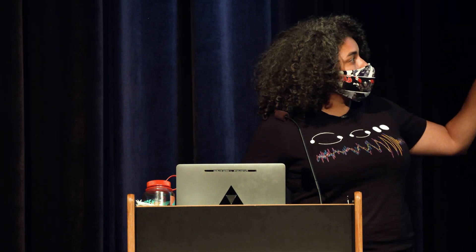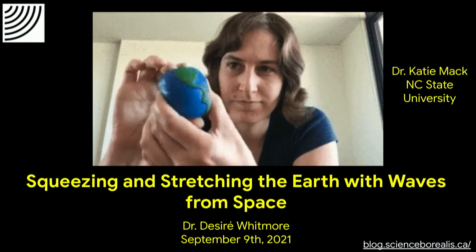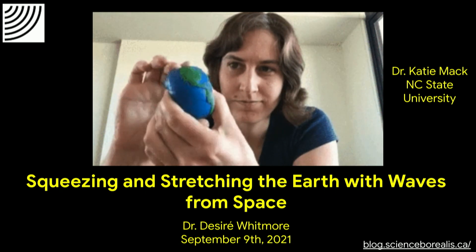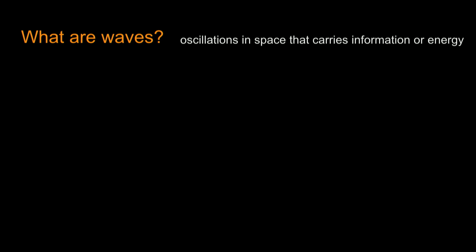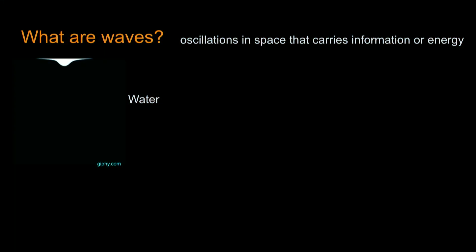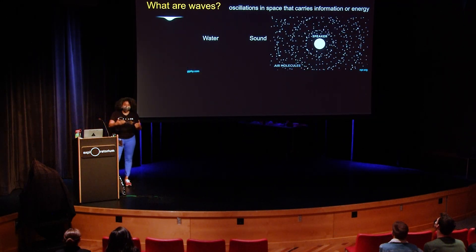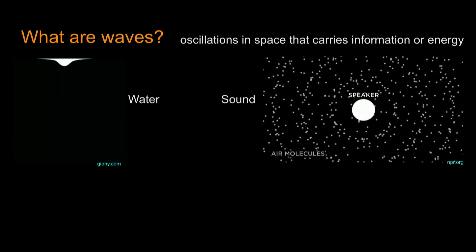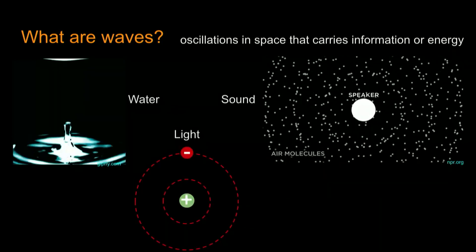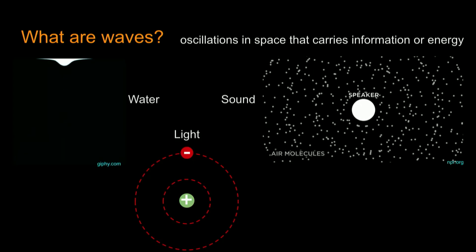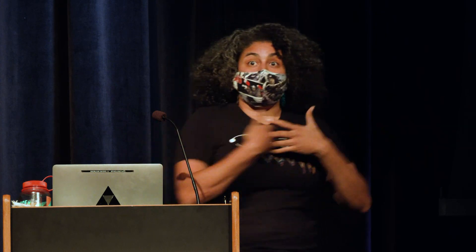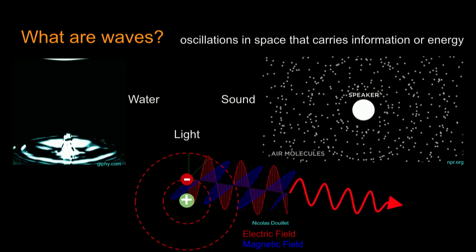We're going to talk about squeezing and stretching, which is representative of the waves from space. In order to think about how we can squeeze and stretch the earth with waves, we have to understand what waves are. Waves are oscillations in space that carry information or energy. If you have water and you make a water wave, you tap the water, you move the water - you create motion. How do you make a sound wave? You create motion in the air molecules and they bounce off their neighbors. And light? You create motion of electrons, make an electron jump from a higher energy state to a lower energy state, and a light wave comes out. Waves are all about creating motion.